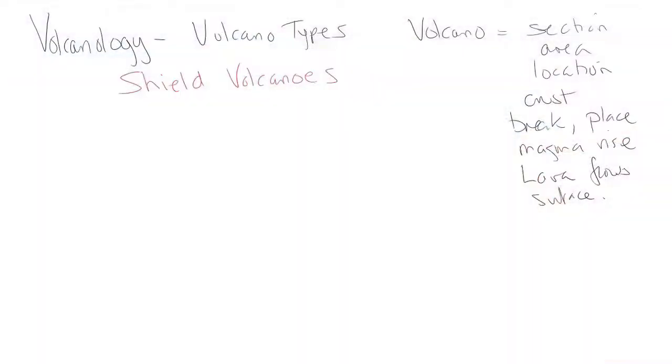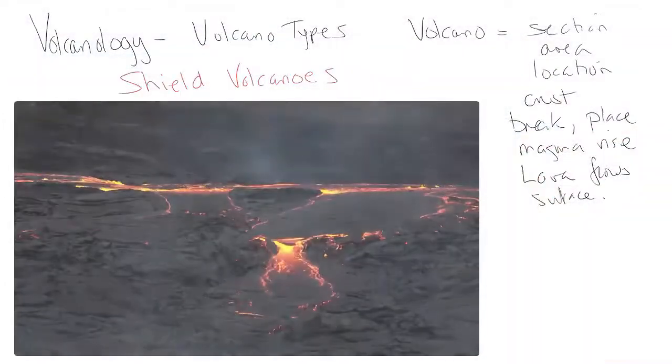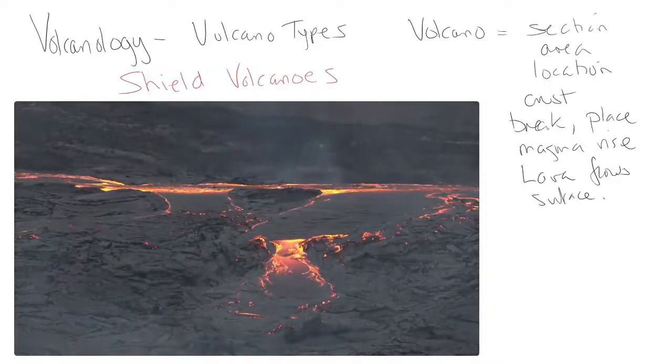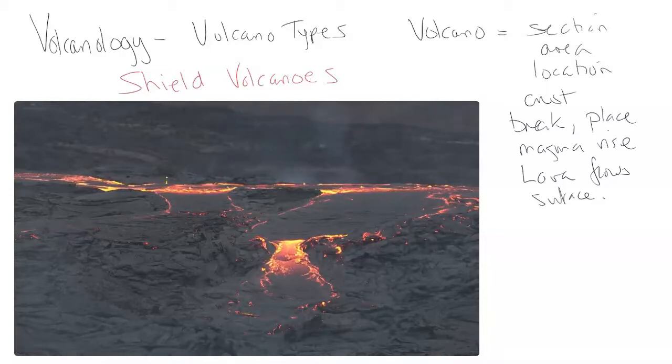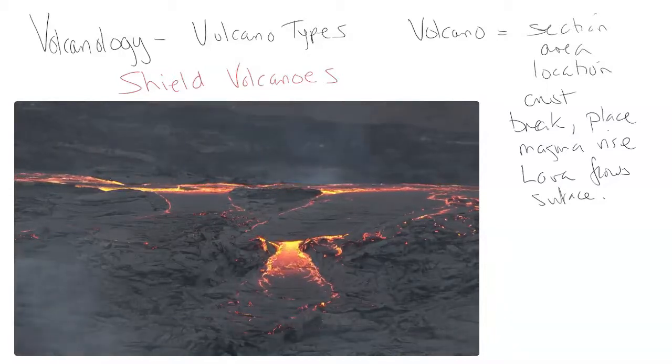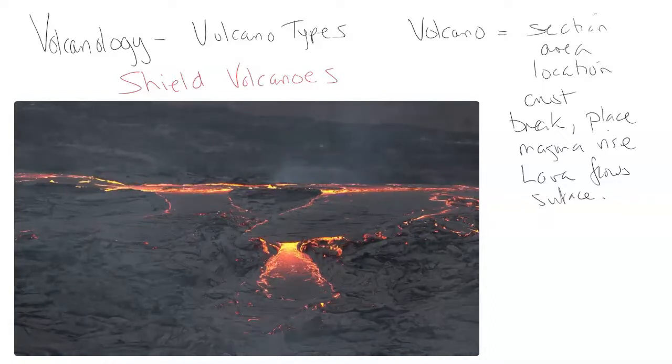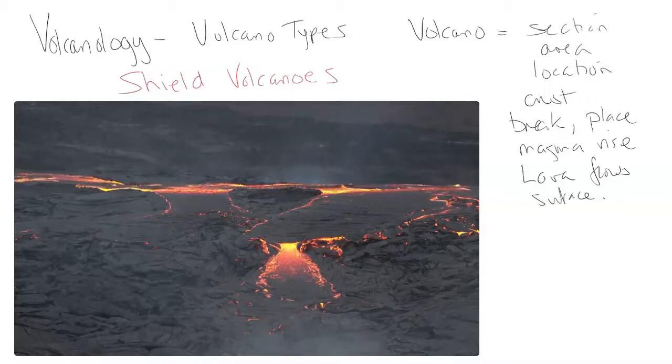We know that lava is going to cool and consolidate and crystallize into solid rock we call igneous rock. Basically, a volcano isn't just that beautiful, really tall Hollywood kind of volcano that's conical shaped and very explosive. Volcanoes come in different types based on the magma and lava that create it.